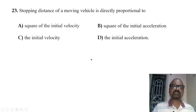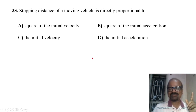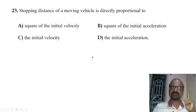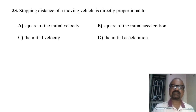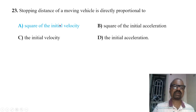The stopping distance of a moving vehicle: using v² = u² − 2as, stopping distance is proportional to u² divided by 2a. So stopping distance is directly proportional to the square of the initial velocity.